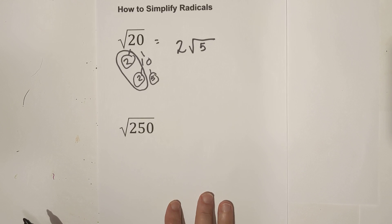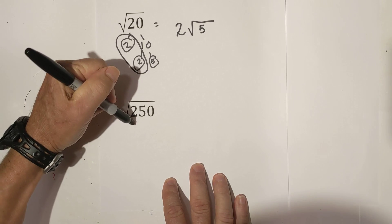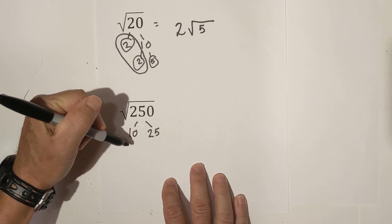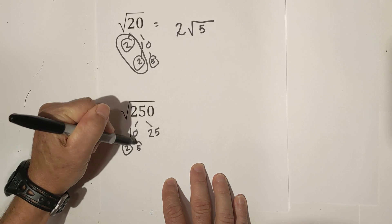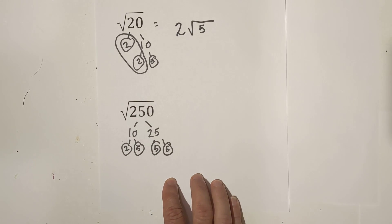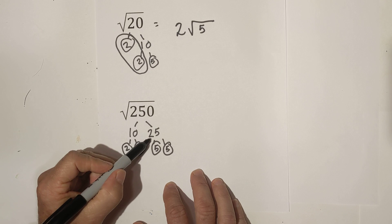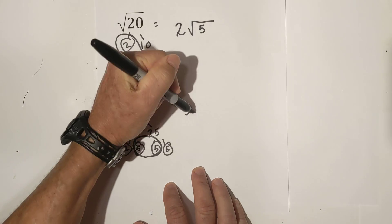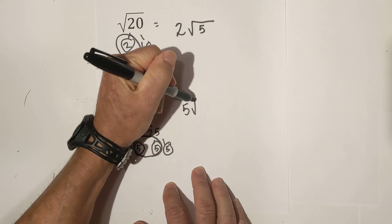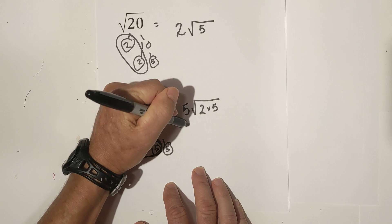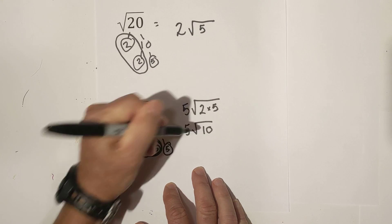Now let's move on to 250. I'll complete a factor tree: 10 times 25 equals 250, then 2 times 5 — circle both because they're prime — and then 5 times 5, circle the 5. We have one pair of 5s, so 5 goes on the outside. What we have left is 2 and a 5, and we multiply those, so it becomes 5 square root 10.